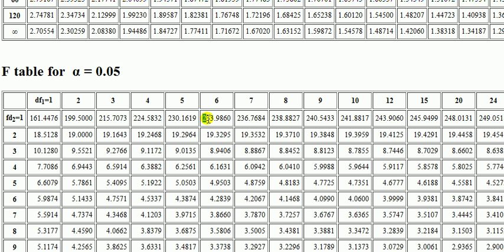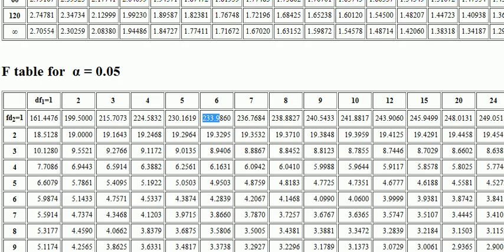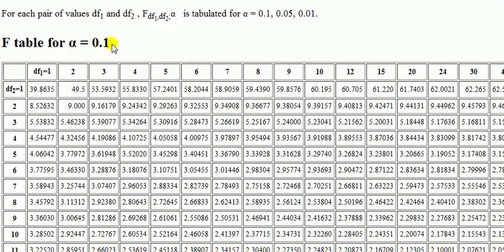Well, if it was alpha at 5%, the answer should be 234-ish, it's not, because the figure is 58.2. So let's try a different significance level, 0.1.